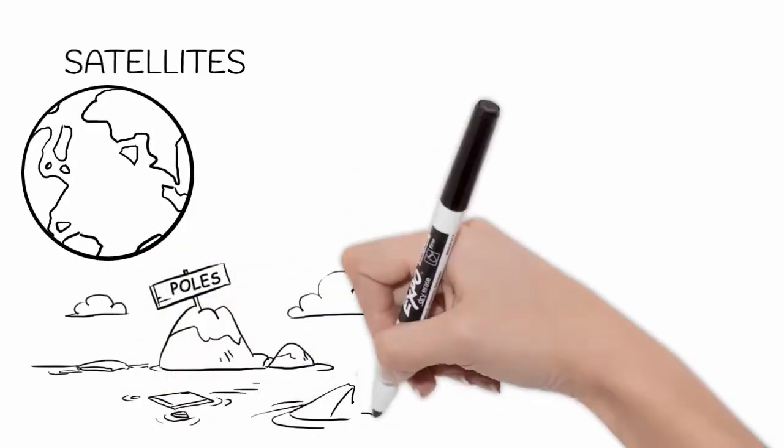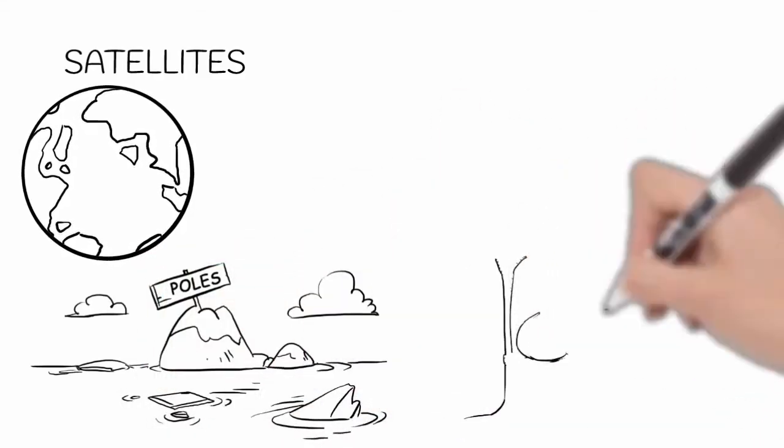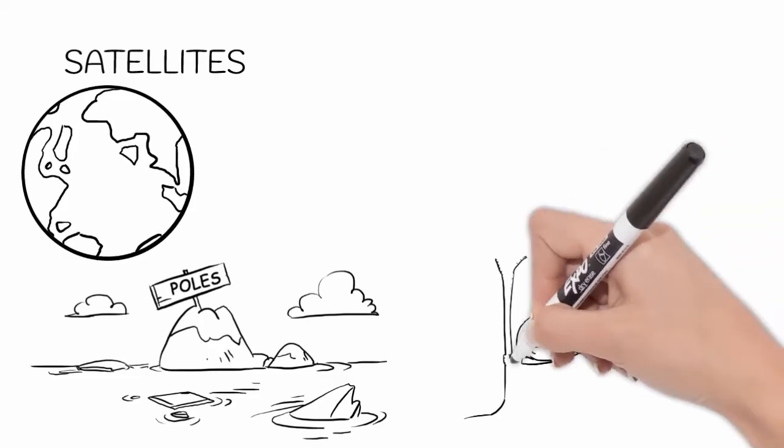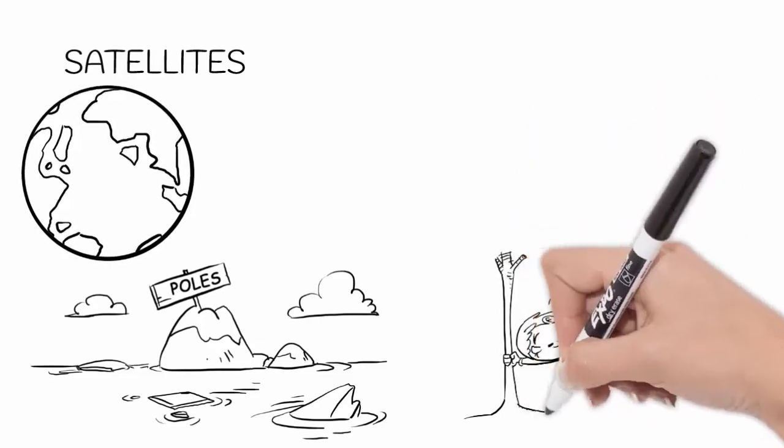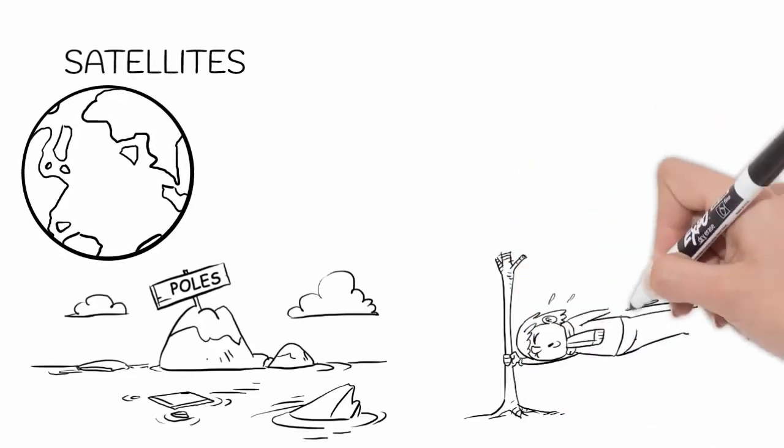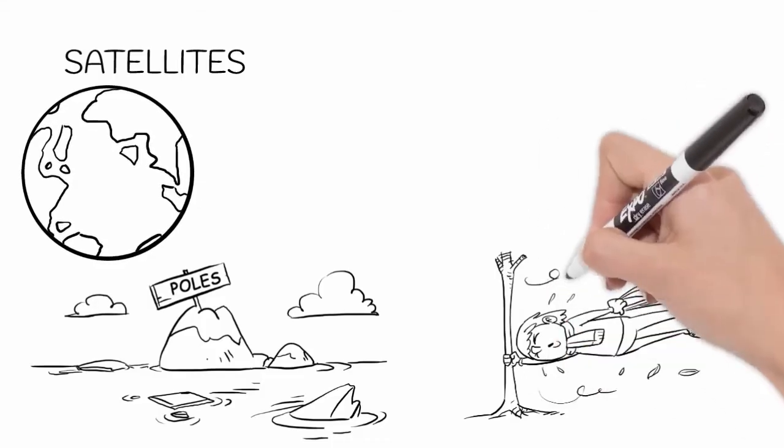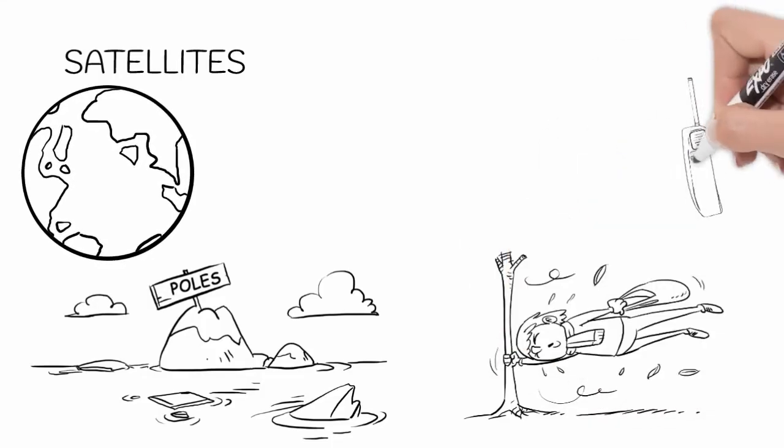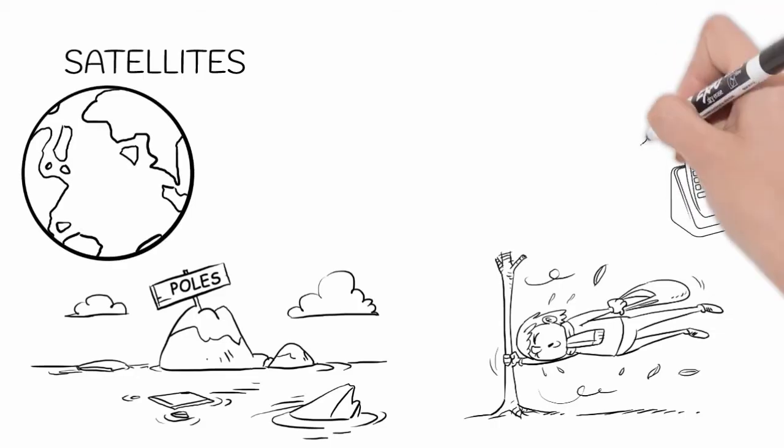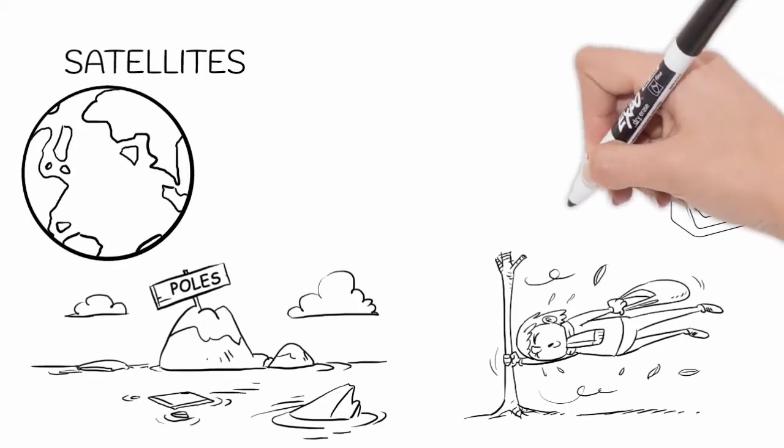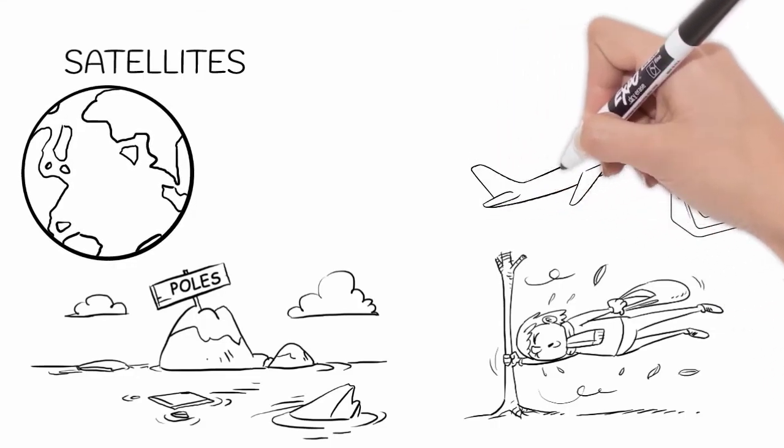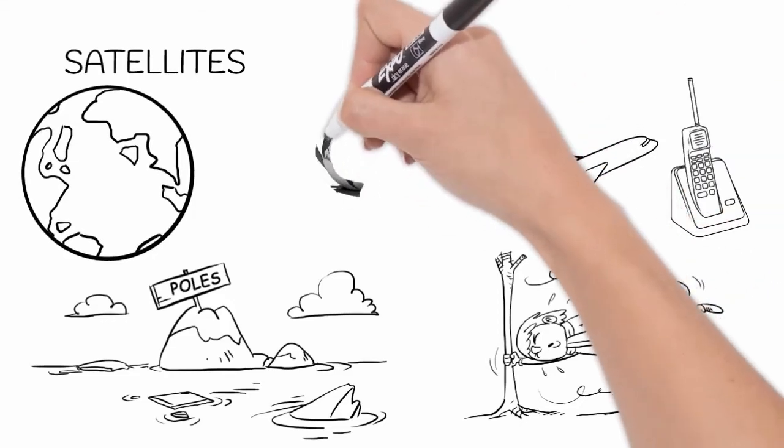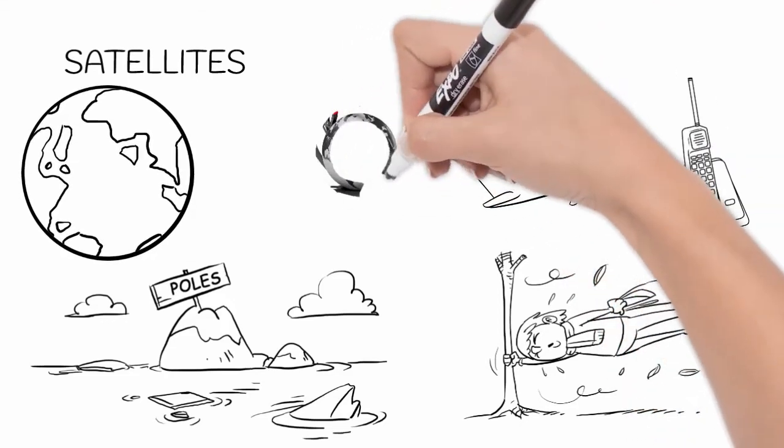Satellites give us warning before major weather disasters hit, for example cyclones, so we can warn people to evacuate certain areas or put appropriate safety measures in place. Satellites transmit TV signals, telephone calls, and sat nav systems in cars and airplanes. They provide information on pollution from cars and factories and how that is impacting our atmosphere.